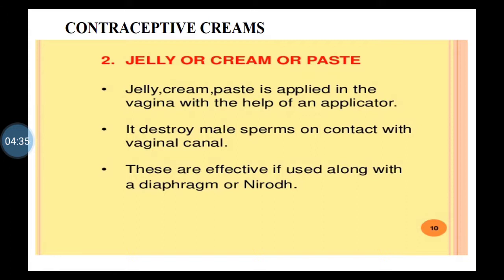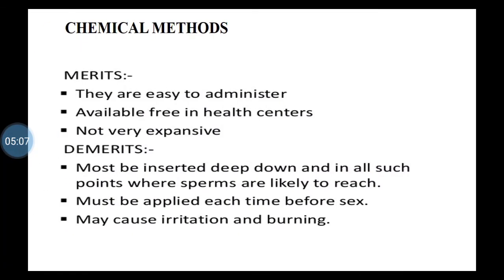Contraceptive creams and jellies are applied in the vaginal area with the help of an applicator. They destroy male sperms and are effective when used along with a diaphragm or condom. At body temperature, the cream melts and produces a thin film of chemical barrier, acting as a chemical method of contraception.